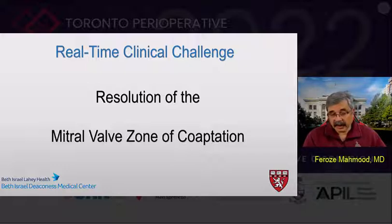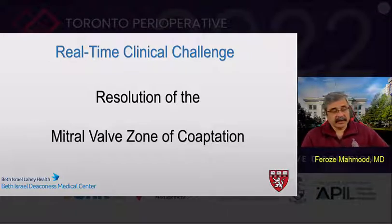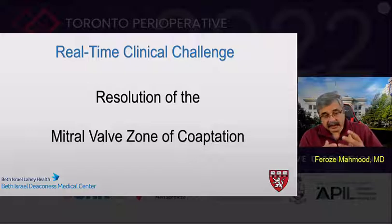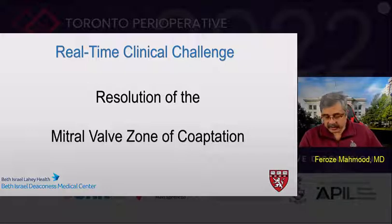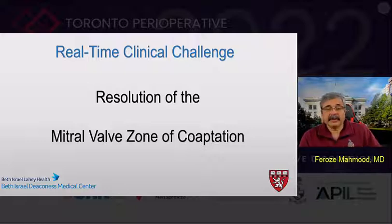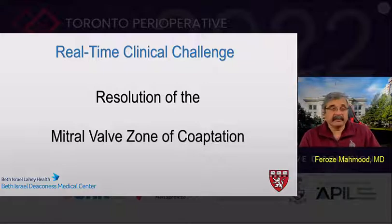Number one, because of the low line density and low resolution of the images. And because sometimes the image quality is not great enough to truly define the extent of apposition or the coaptation of both anterior and posterior leaflet across the anterolateral to posteromedial commissure. That is a very real-time clinical challenge because the zone of coaptation forms the end point of many mitral valve repair techniques, both for degenerative as well as functional mitral regurgitation.